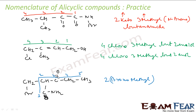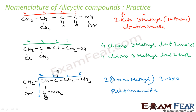And at third position I have oxo. Then we have five carbons, so it is penta — all single bonds — pentane, and then the amide group, so pentanamide. So it is 2-(bromomethyl)-3-oxopentanamide.